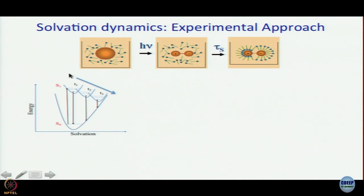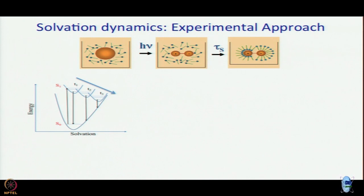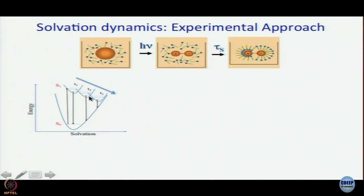If this molecule is fluorescent, and we can record emission spectra at different times after excitation — either by gated emission or by recording steady-state and time-resolved data and constructing the time-resolved emission spectrum — at time t equal to 0, you get emission at some particular maximal frequency. As time passes, there is going to be a red shift, because the energy gap between the ground state and the excited state keeps decreasing due to stabilization.